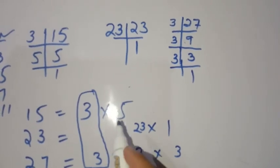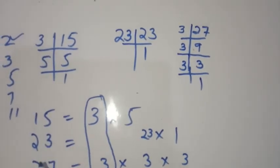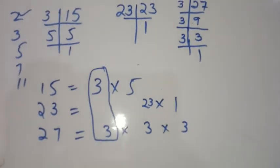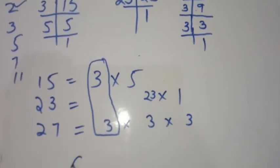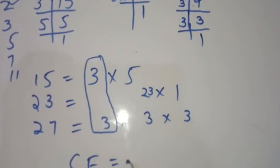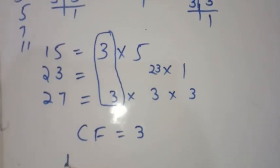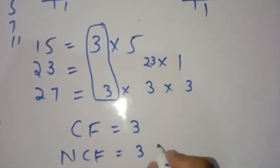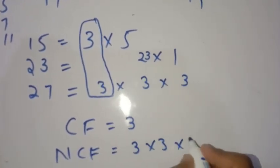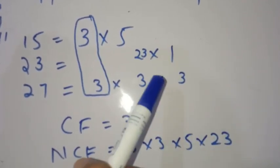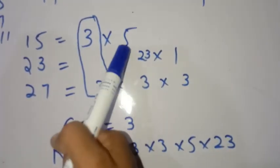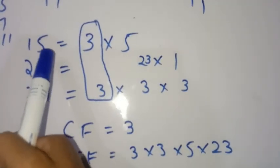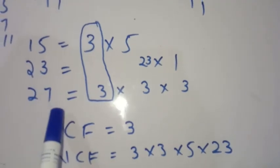There will be no common factor among 15, 23, and 27 except 3. So the common factor is 3. The remaining factors are called non-common factors. The non-common factors are 3 × 3 × 5 × 23.